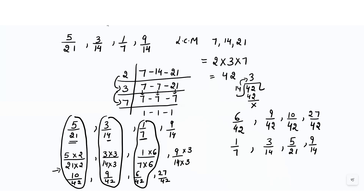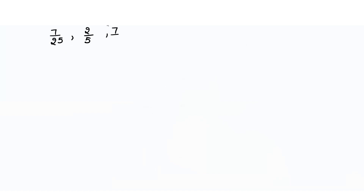This is how we arrange fractions in order. Let's take another example: 7/25, 2/5, 7/10, 9/50. We need to arrange these in descending order. First, we make the denominators the same by calculating the LCM of 5, 10, 25, and 50.